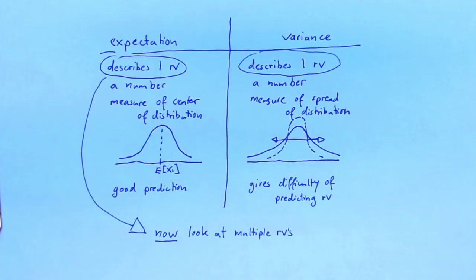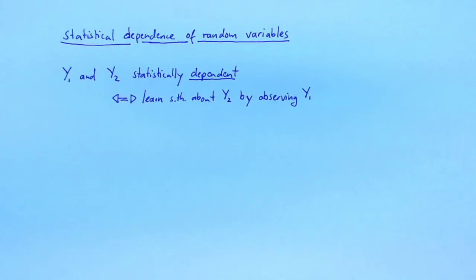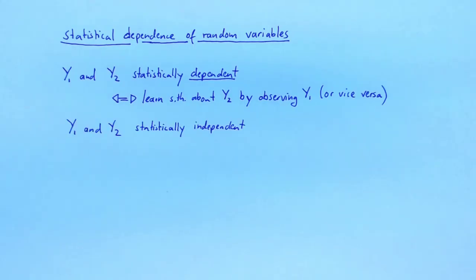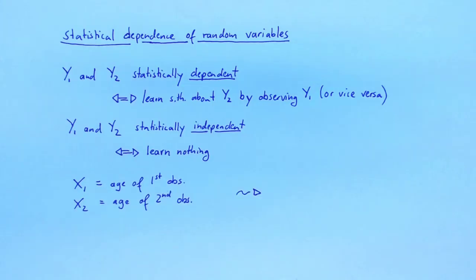An important concept for describing the relationship between two random variables is the notion of statistical dependence. Random variables y1 and y2 are statistically dependent if by observing y1 we learn something about y2, or conversely, if by observing y2 we learn something about y1. Random variables y1 and y2 are statistically independent if by observing one random variable we don't learn anything about the other. As before, let x1 denote the random variable that gives the age of the first observation, and let x2 denote the random variable that gives the age of the second observation. Since we are sampling completely at random and with replacement, learning the age of the first observation is completely uninformative about the age of the second observation and vice versa. This means that x1 and x2 are statistically independent.